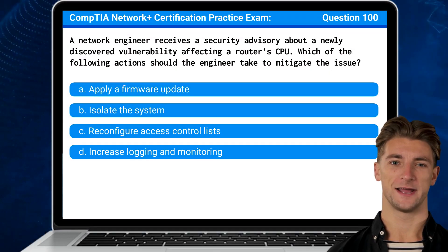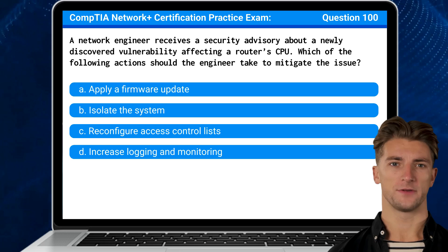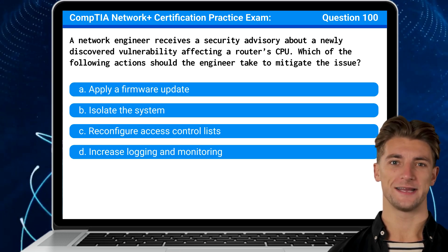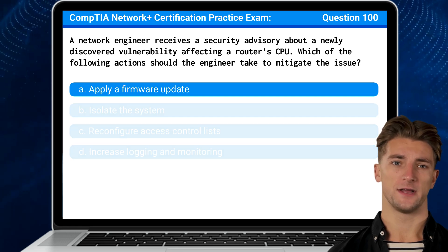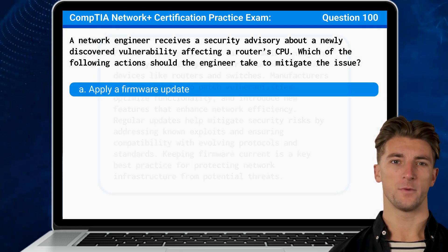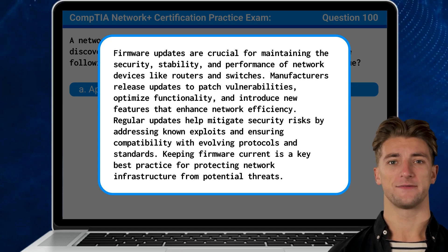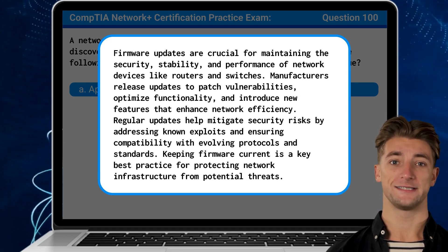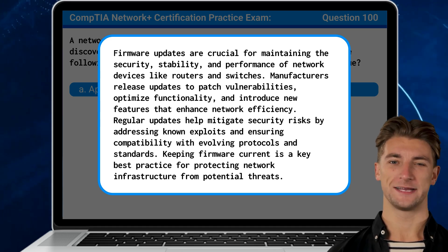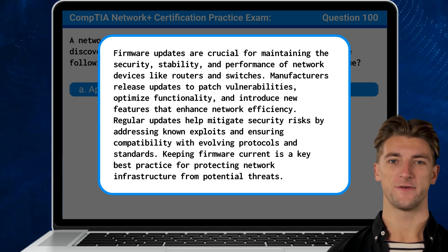Question 100. A network engineer receives a security advisory about a newly discovered vulnerability affecting a router's CPU. Which of the following actions should the engineer take to mitigate the issue? The answer is A. Apply a firmware update. Firmware updates are crucial for maintaining the security, stability, and performance of network devices like routers and switches. Manufacturers release updates to patch vulnerabilities, optimize functionality, and introduce new features that enhance network efficiency. Regular updates help mitigate security risks by addressing known exploits and ensuring compatibility with evolving protocols and standards. Keeping firmware current is a key best practice for protecting network infrastructure from potential threats.